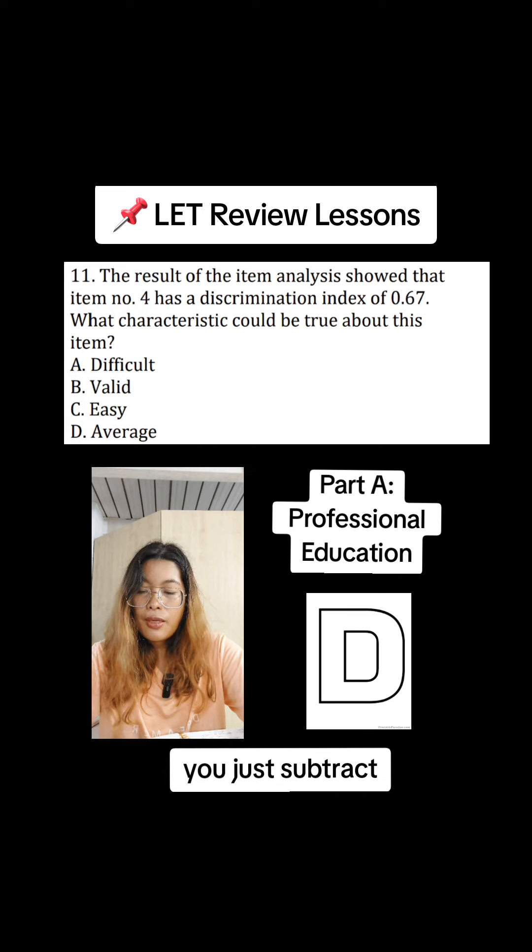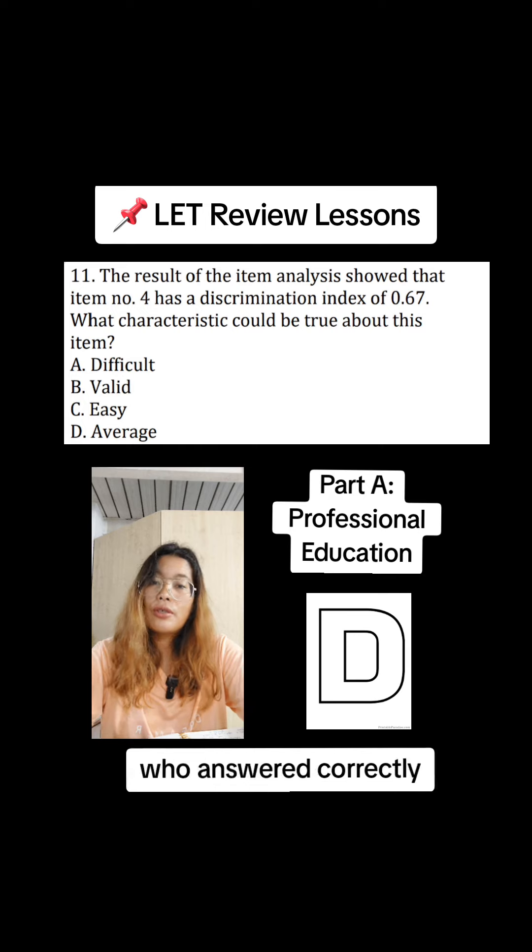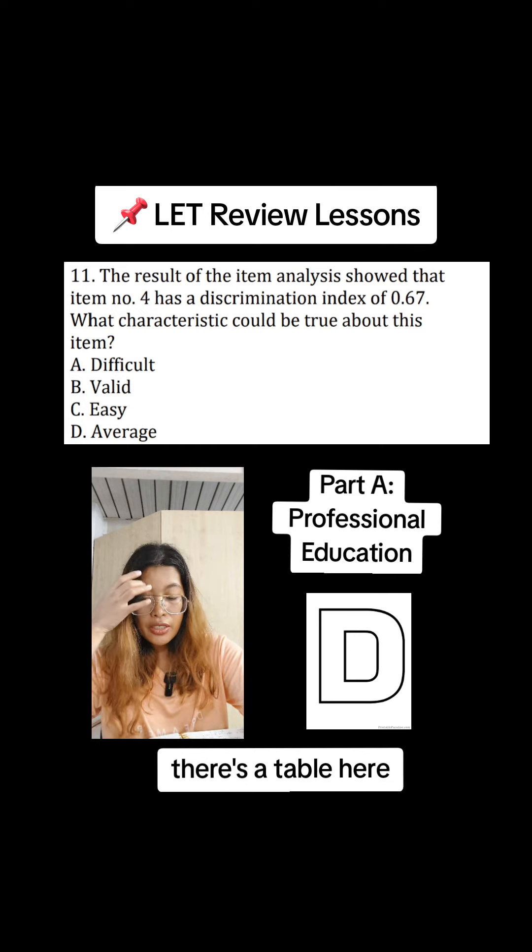For each item, you just subtract the number of students who answered correctly from the number of students in the upper group who answered incorrectly. There's a table here.